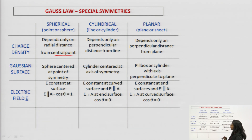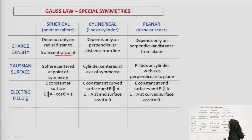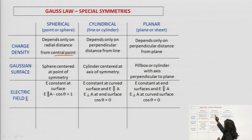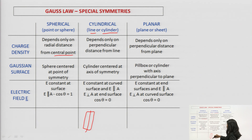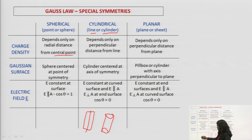If the charge density depends on perpendicular distance from a line only, then it will have cylindrical symmetry. This kind of symmetry is used in the case of line and cylinder only. If there will be a line, we can use cylindrical symmetry. In the case of a cylinder also, we can use cylindrical symmetry. However, in the case of a point, we need to use spherical symmetry. In case of a sphere also, we need to use spherical symmetry.